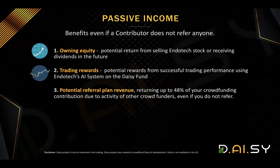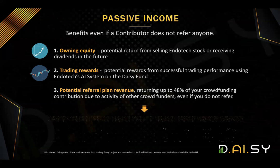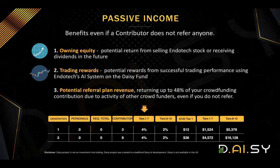The answer is yes. There are three ways to earn on a passive basis. The first one is owning equity that you can claim once Endotech goes public. The second is trading rewards — 50% to 70% of your funds will be traded and you can withdraw the trading rewards at any time. The third way is to earn from the metrics, because the first two generations don't have any requirements to earn referral commissions. So you don't have to invite people to earn from those two generations.